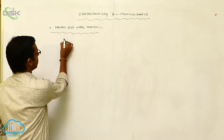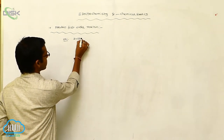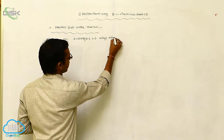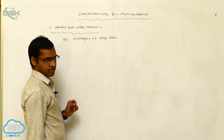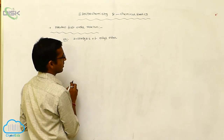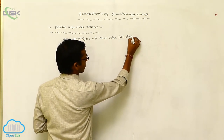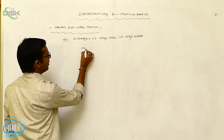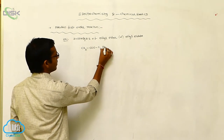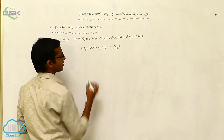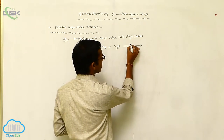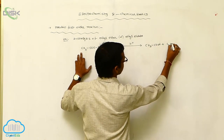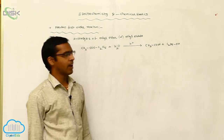For example, consider the hydrolysis of ethyl ester. Hydrolysis of ethyl ester is the best example of a pseudo first order reaction. CH3COOC2H5 is the reactant. Whenever the ester undergoes hydrolysis under acidic conditions, it gives an acid product: CH3COOH plus ethyl alcohol. The ester undergoes hydrolysis to produce acid and alcohol.